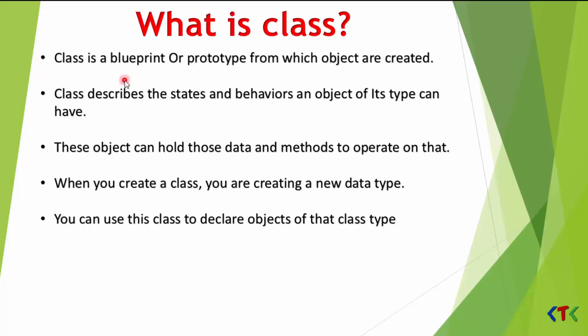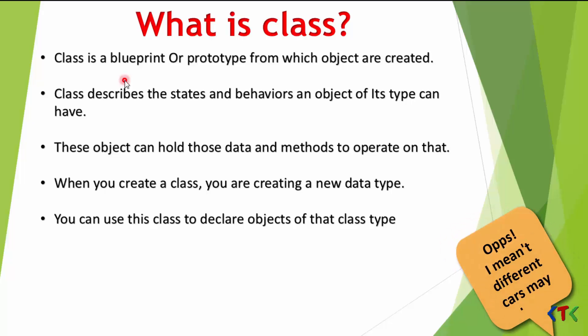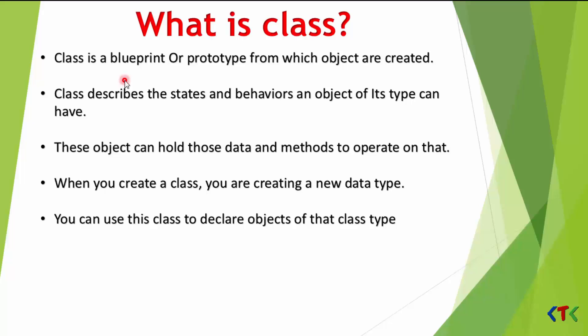This object can hold data — for example, the color of the car — because different cars will have different colors or different models. So cars will have the same states but with different values, and these methods will operate on that data. Every object will have the same kinds of methods like turn on and turn off.